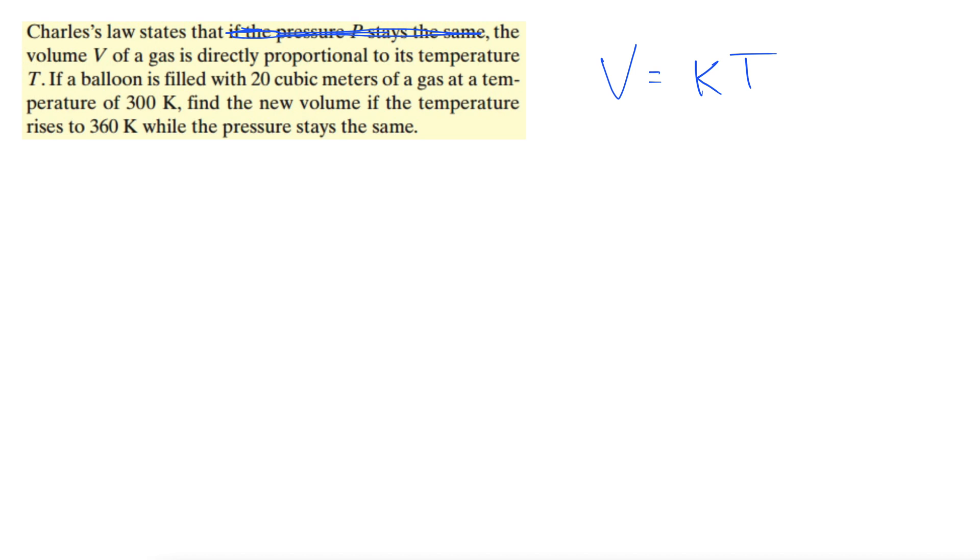Okay, so let's go on from there. So the steps of these problems, again, are you begin by solving for K, and then you use that K to solve for a new value, I guess this time for volume. Okay, so let's do it. It tells us that, let's see. So here are the two values that we're going to use to solve for K. We have 20 cubic meters and 300 K. If a balloon is filled with 20 cubic meters of a gas at temperature 300 K. Okay. So let's do that.